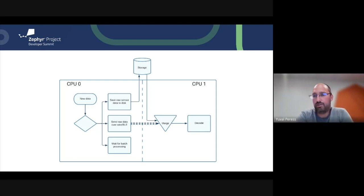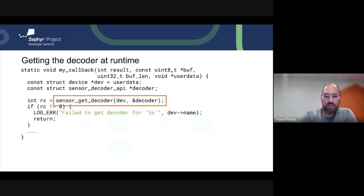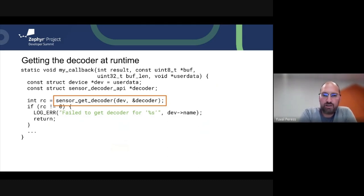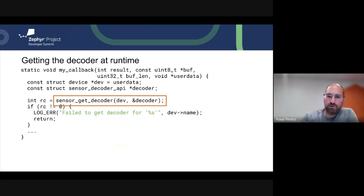As long as the two cores are running the same version of Zephyr, the decoders are guaranteed to be compatible. In addition to getting the decoder statically, you can also get it at runtime if needed. In this case we have one handler for the callback that uses the user data as a device pointer, and sensor_get_decoder will get a pointer to the decoder. The cost of this is basically one system call if you have user threads enabled.